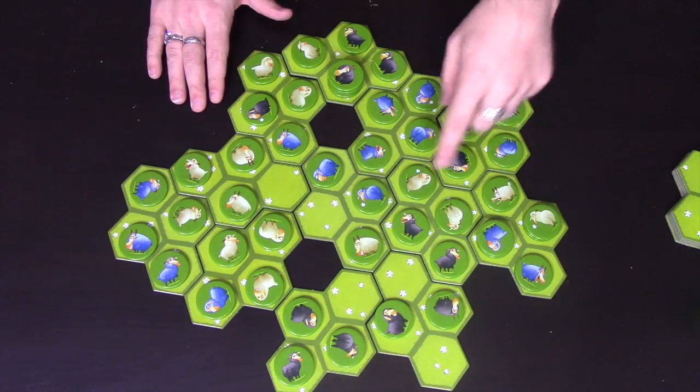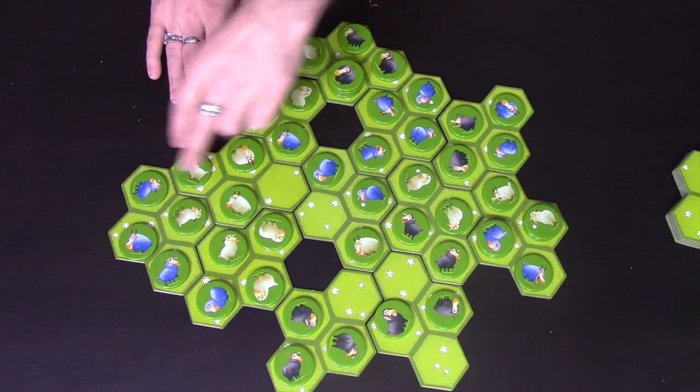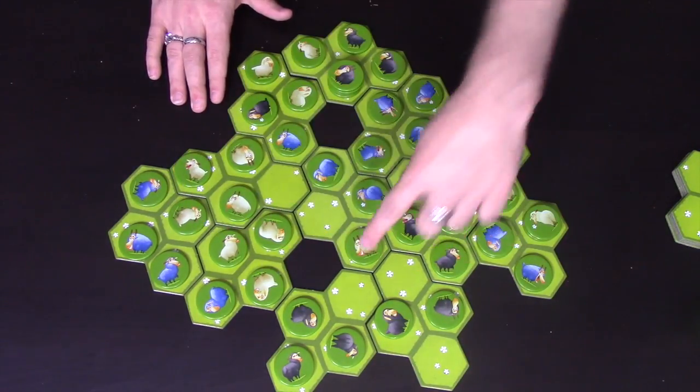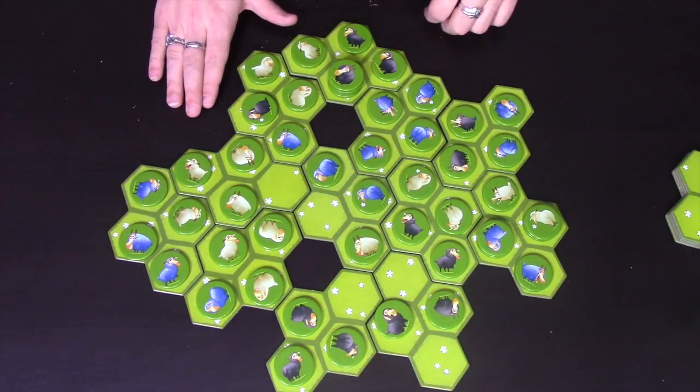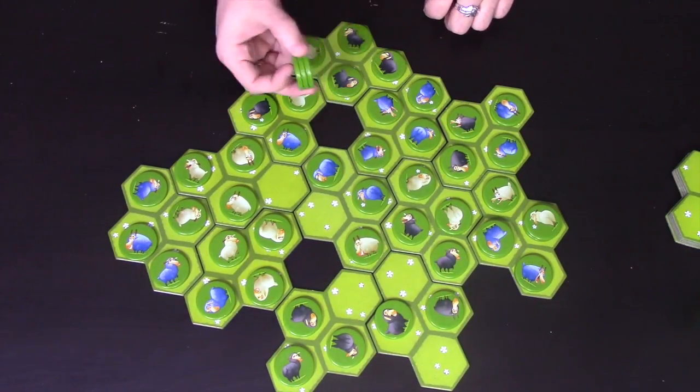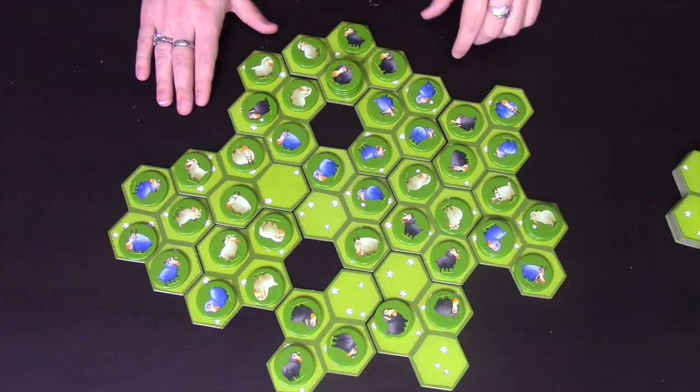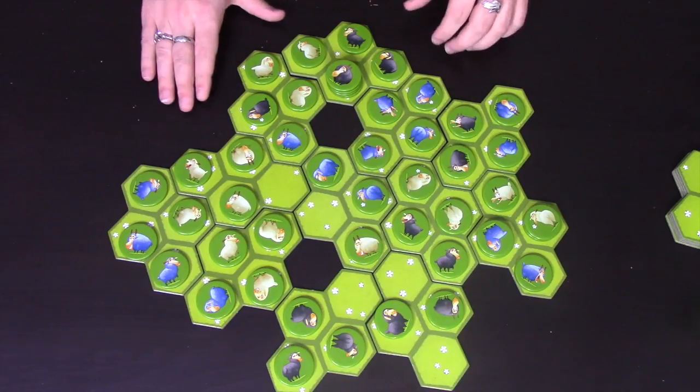In this case, white has 4, 8, 12, 13, 14, 15. And I think blue has 15 too, whereas black got stuck here, so black only has 12. Whoever has the most visible sheep is the winner. In this case, it's a tie between blue and white.